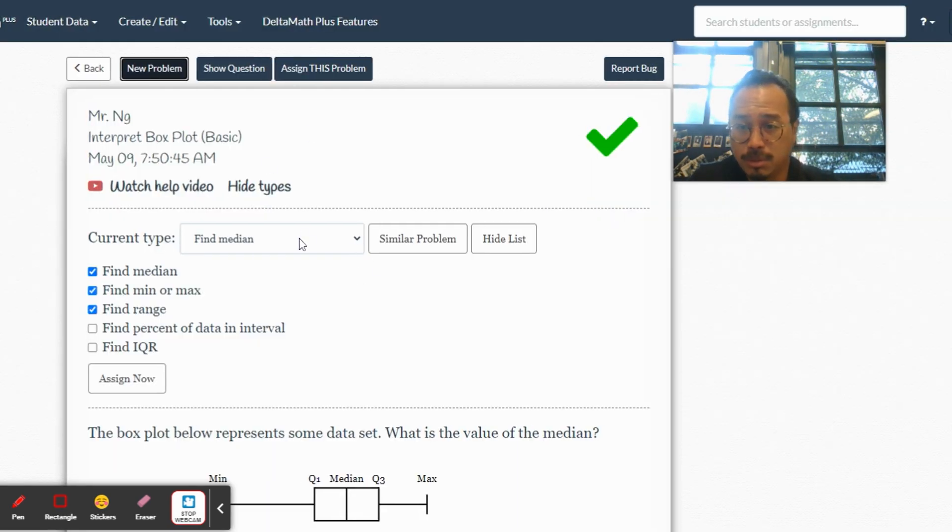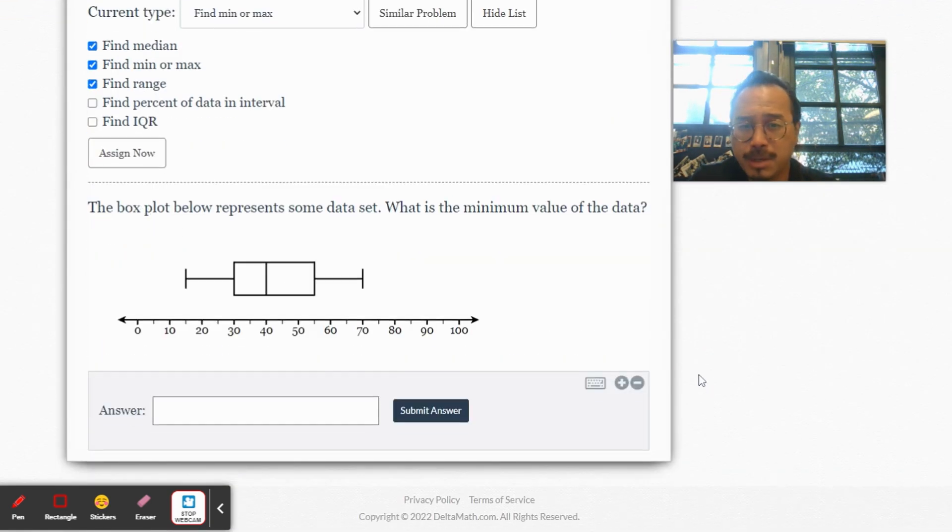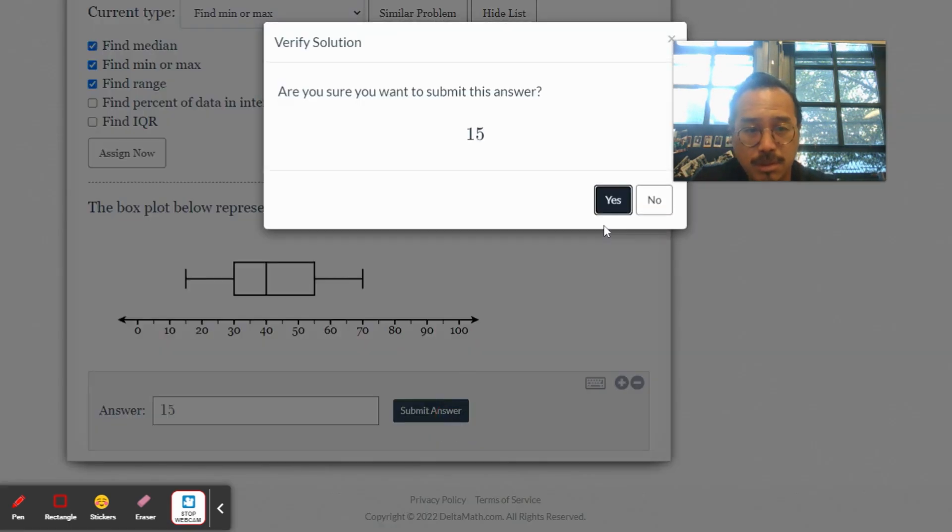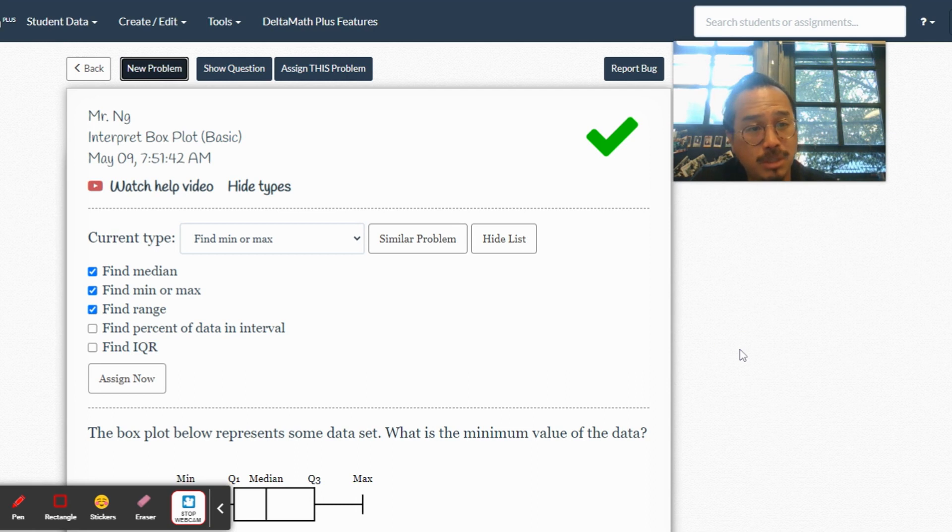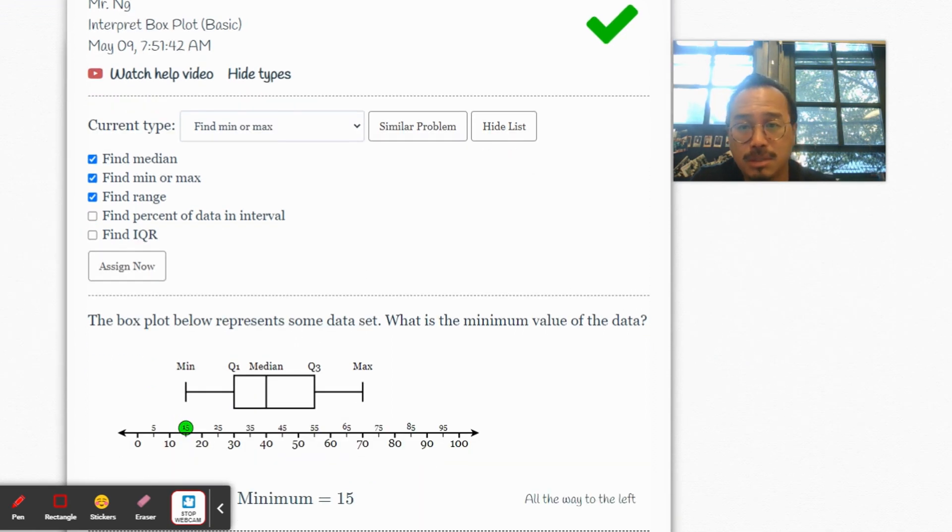Let's do a couple more. Find median, find minimum, max. All right, min or max. What do they want to know? What's the minimum value? What's the smallest number here? That's 15. And this is going to prepare you well for next year because you guys might be in a bit of a time crunch by the time you get to this topic.